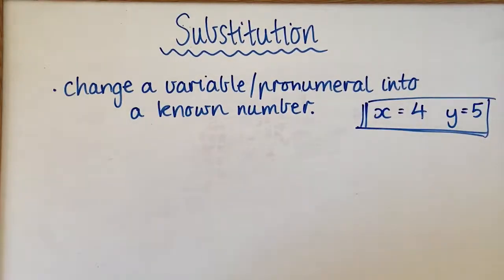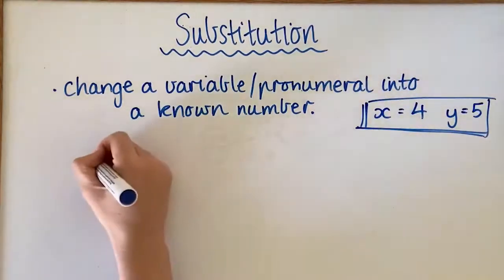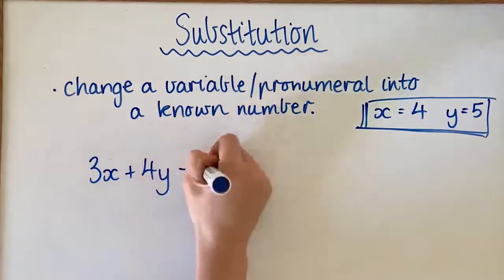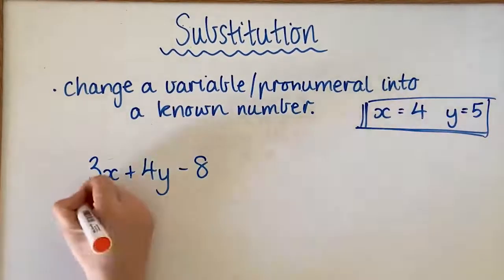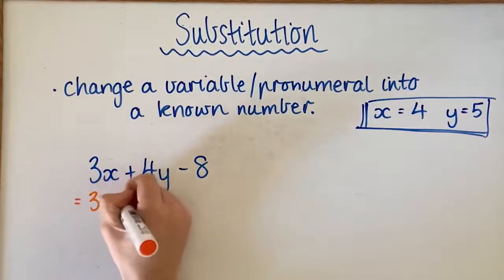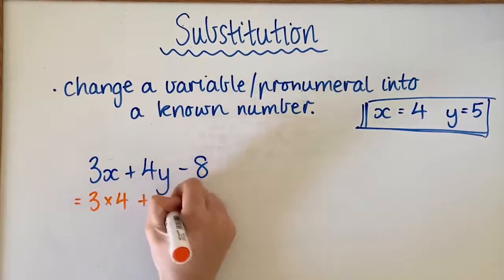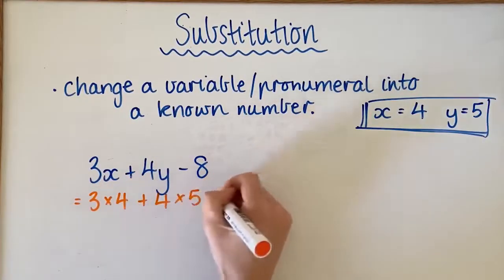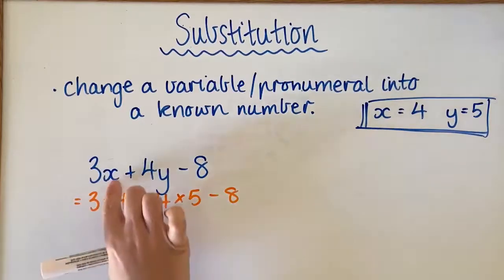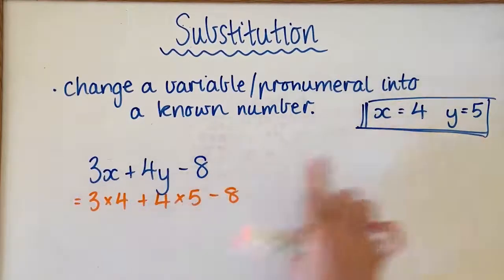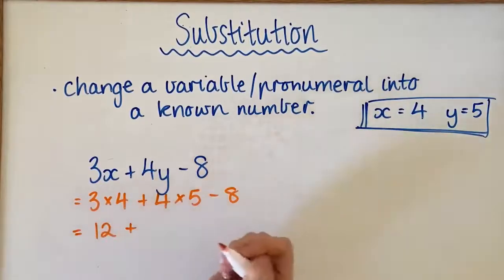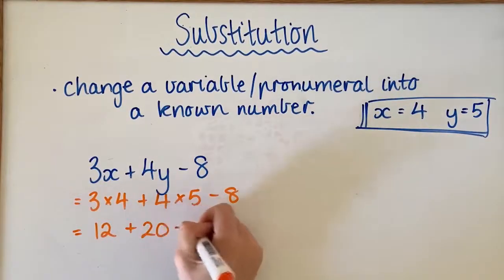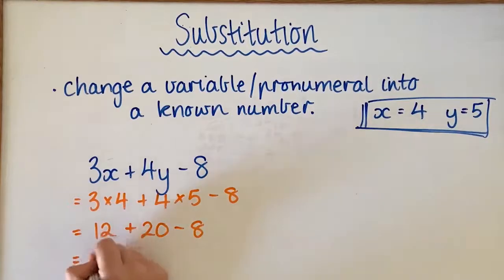You might get a more complicated problem. Again, you're going to look at the values that you've been given. So we would go 3 times 4 plus 4 times 5 minus 8. Our x we've turned into a 4, and our y we've turned into a 5, which gives us 12 plus 20 minus 8, equals 24.